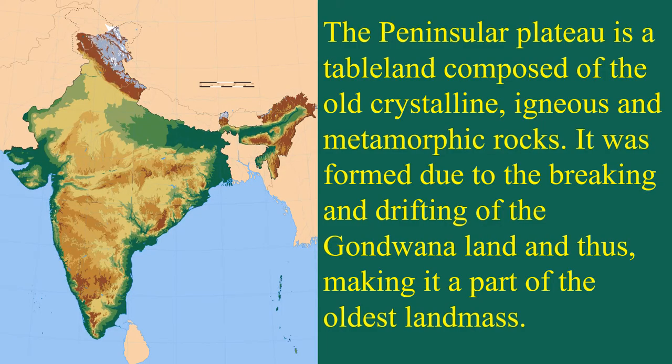The Peninsular Plateau is a tableland composed of the world's oldest crystalline igneous and metamorphic rocks. It was formed due to the breaking and drifting of the Gondwana land, making it a part of the oldest land mass. This is the biggest major relief feature in India.